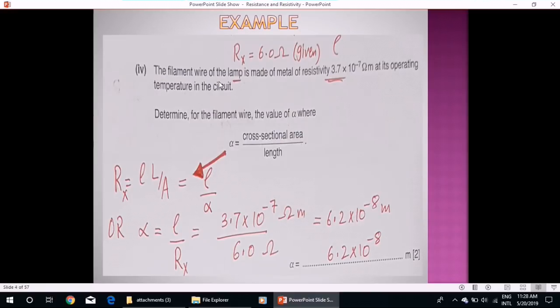Example: The filament wire of the lamp whose resistance is 6 ohm is made of metal of resistivity 3.7 into 10 raised to the power minus 7 ohm meter at its operating temperature. In the circuit, determine for the filament wire the value of alpha, where alpha is equal to cross-sectional area over length.